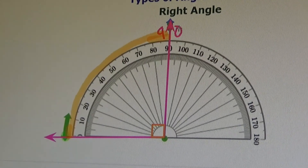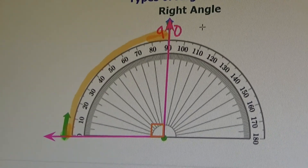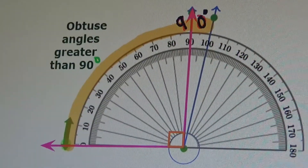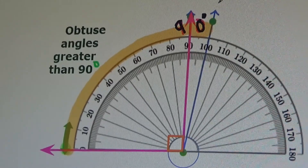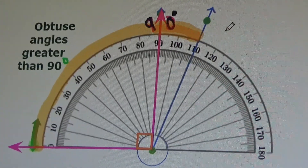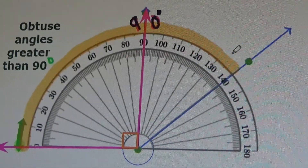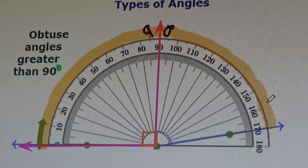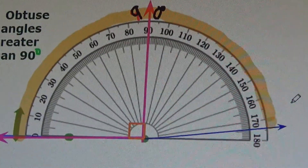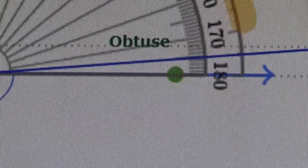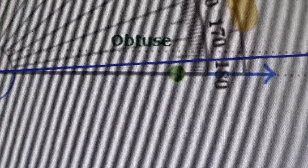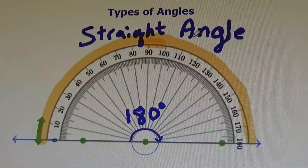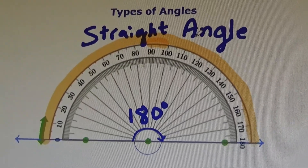Now we're going to continue rotating this ray around to create angles greater than 90. 100 degrees — greater than 90 — these are obtuse angles. Obtuse angles are greater than 90 degrees. As the ray continues: 110, 120, 130, 140, 150, 160, 170, 175, 176, 177, 178, 179 — still obtuse. 180 degrees: straight angle.